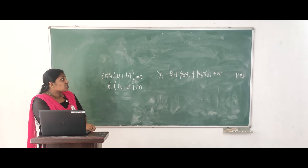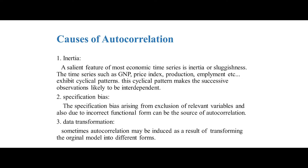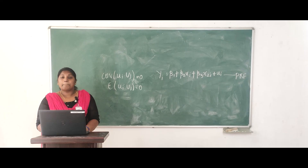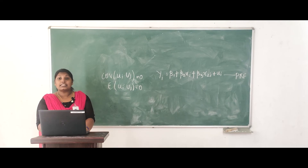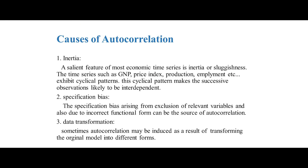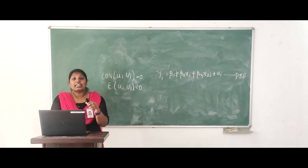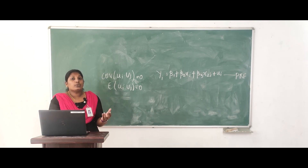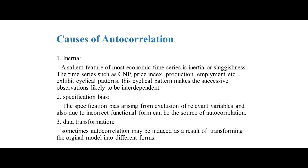What are the causes of autocorrelation? The first important cause is inertia or sluggishness. A salient feature of most economic time series — such as GNP, price index, production, employment, etc. — is that they exhibit cyclical patterns. Therefore, in regression with time series data, this cyclical pattern makes successive observations likely to be correlated rather than independent. The next important reason is specification bias, which arises due to the exclusion of relevant variables or incorrect functional forms, and can be a source of autocorrelation.